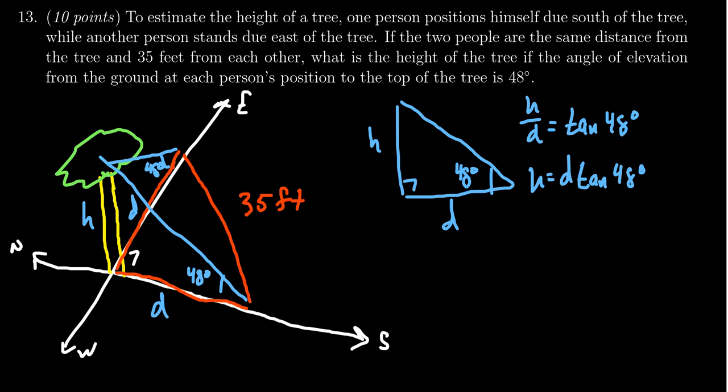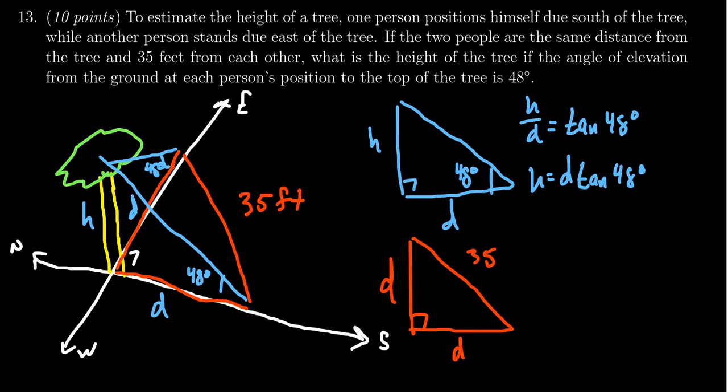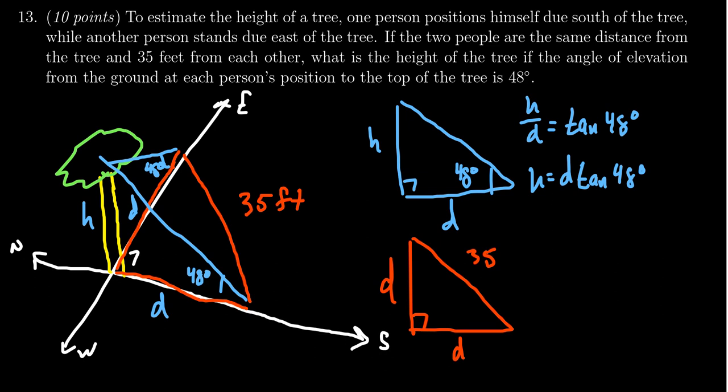For which we know there's 35 feet right here. And we also know there's a distance D and D. So we could solve this using the Pythagorean equation. We're going to get D squared plus D squared is equal to 35 squared. In other words, 2D squared equals 35 squared. D squared equals 35 squared over 2. Take the square root. You get D equals 35 over the square root of 2. So you could use the Pythagorean equation to do this.